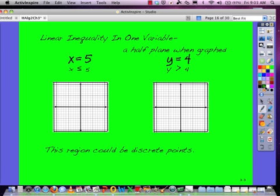Reminding you that we should have memorized, x equals 5 is a special type of line. It is known as a vertical line. x equals any number is a vertical line. And the y equals 4 is our horizontal line.